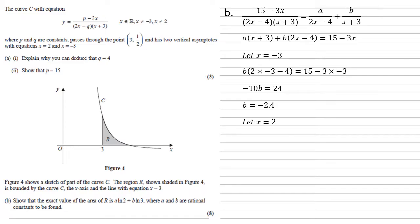Doing a similar thing to cancel out the b, if we let x equals 2, putting that into our equation in the second line there gives us that 5a equals 9, so a equals 1.8. Therefore y can be rewritten as 1.8 over 2x minus 4 minus 2.4 over x plus 3. Just simplifying the first fraction gives us 0.9 over x minus 2 minus 2.4 over x plus 3.